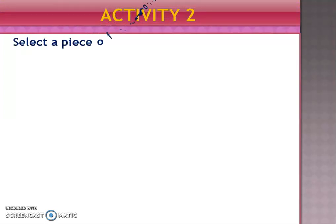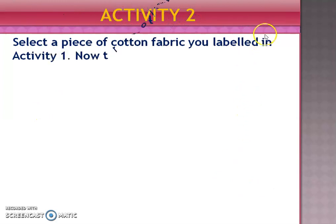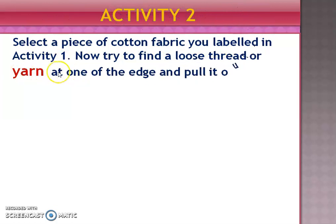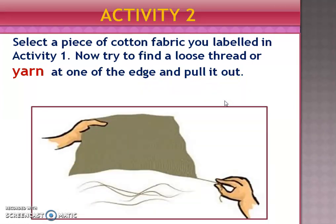Activity two: select a piece of cotton fabric you labeled in activity one. Now try to find a loose thread or yarn at one of the edges and pull it out. When you pull the yarn or loose thread apart you can see thinner strands. These thinner strands are called fibers.